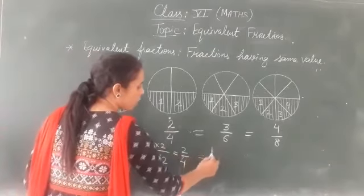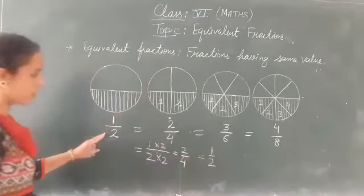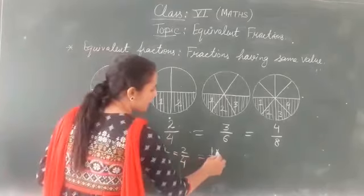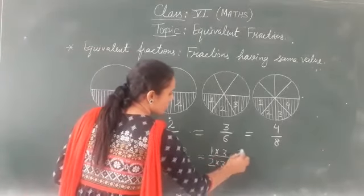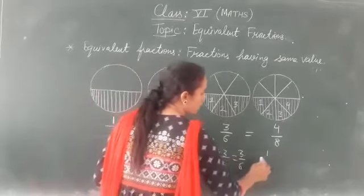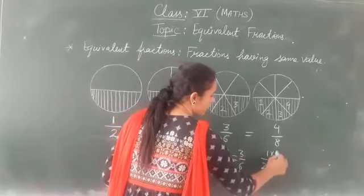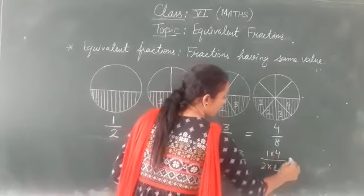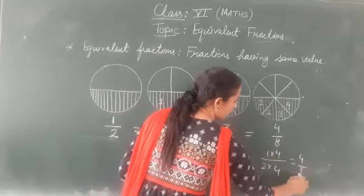Similarly this how we got from here. From 1 by 2, how we got it? Multiplied this by 3. Then we got this fraction 3 by 6. Similarly this 4 by 8, how we got? 1 by 2 we will multiply by 4. Then it is 4 by 8.